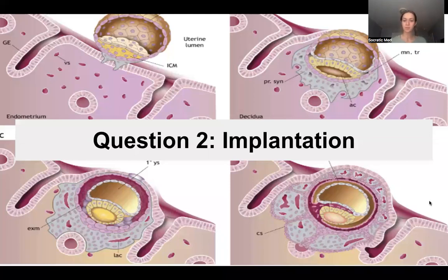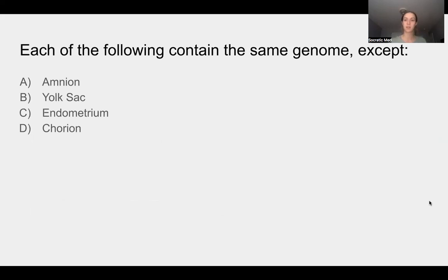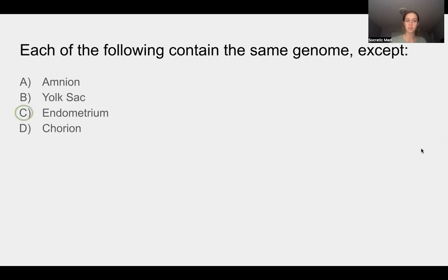Question two: each of the following contain the same genome, except which one? Take a minute, pause the video, and answer the question. Assuming you've answered it, the answer is C, endometrium. That is because A, B, and D are all stemming from the egg, whereas the endometrium is from the mother's genome, so it will not have the same genome. Those other options all come from that blastocyst.